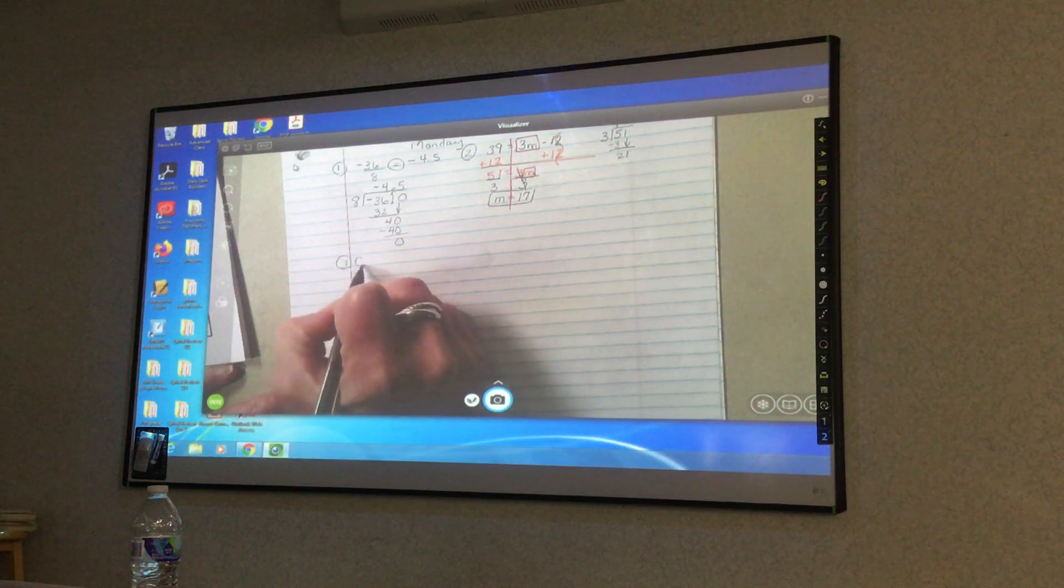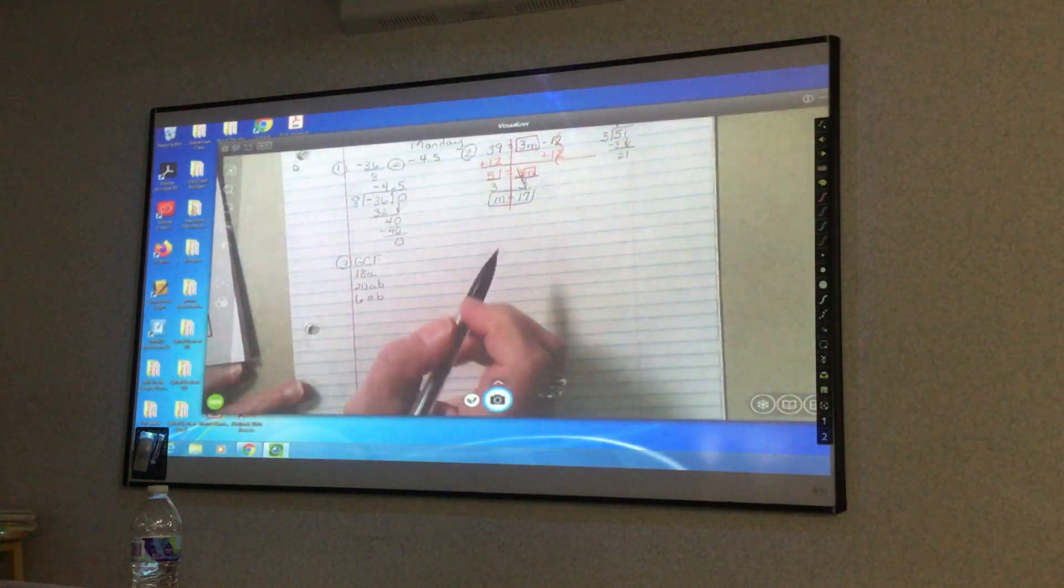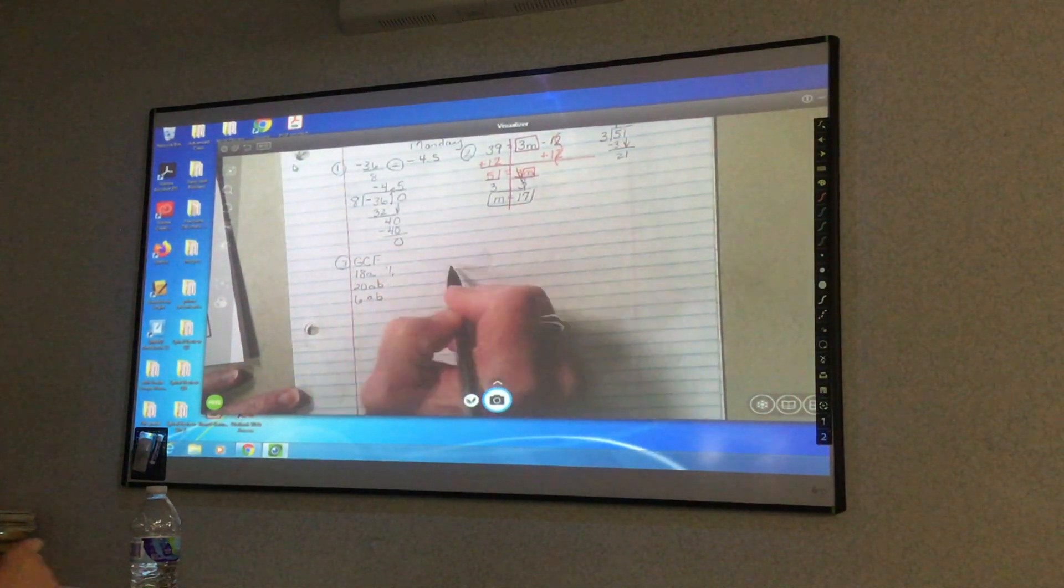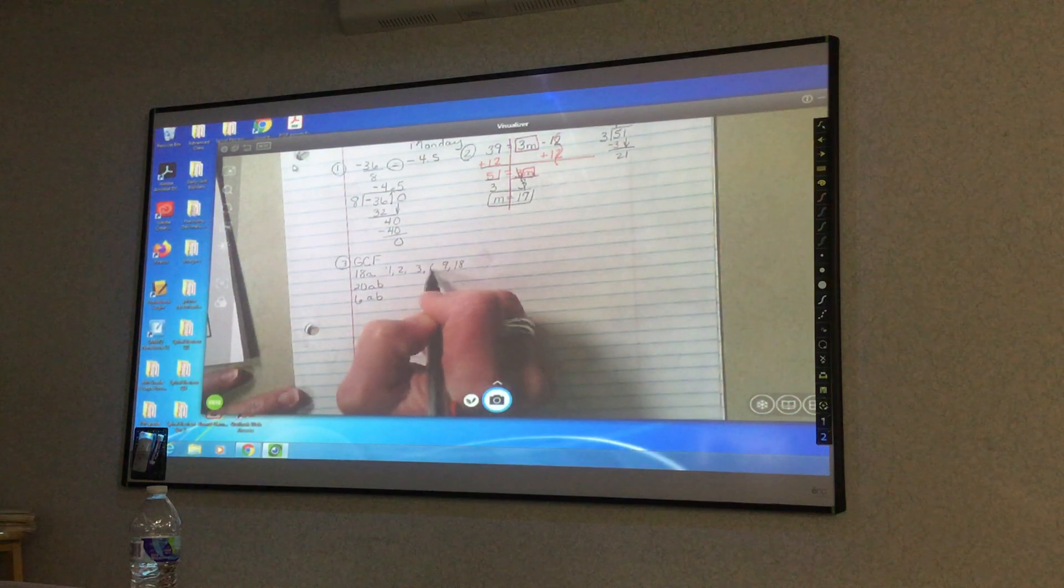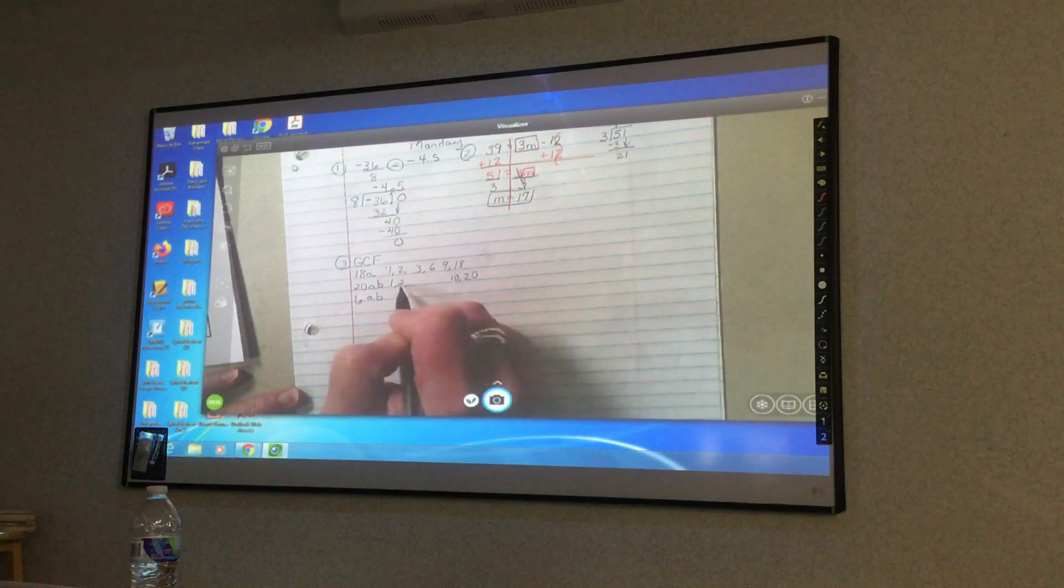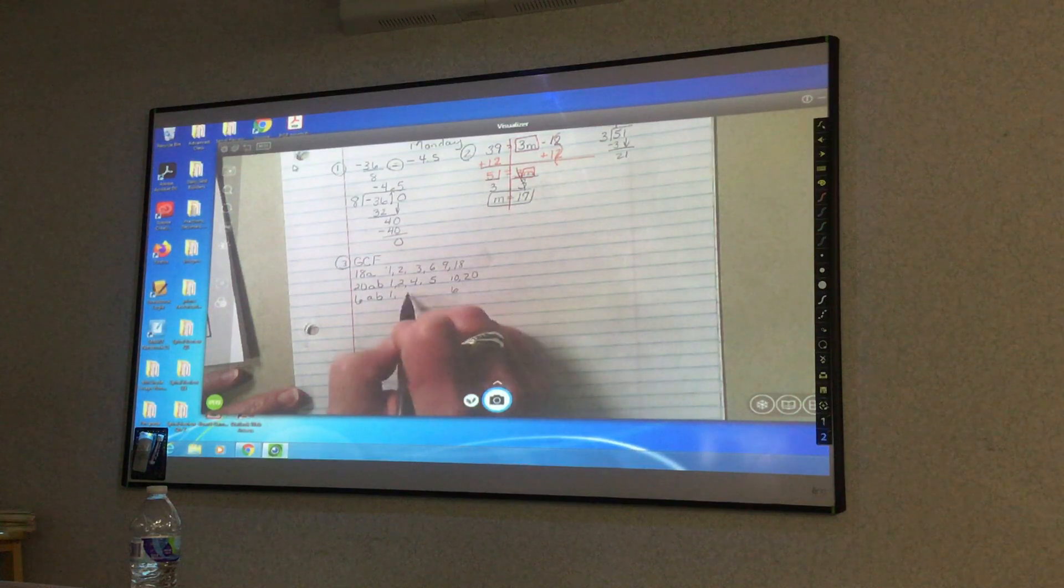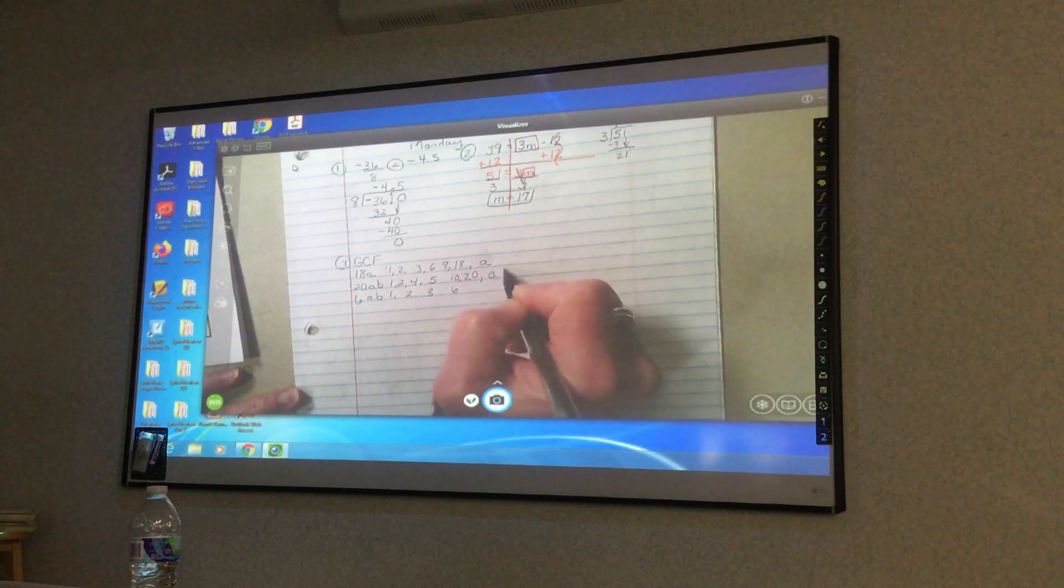Number 3. We need to find the greatest common factor of 18a, 20ab, and 6ab. You can do it by the factor tree. You can figure it out by doing like 1 and 18, 2 and 9, 3 and 6. 1 and 20, 2 and 10, 4 and 5. 1 and 2 and 3. Don't forget that. Now I'm going to go back and add my letters. I've got an a, I've got an ab, and I've got an ab.